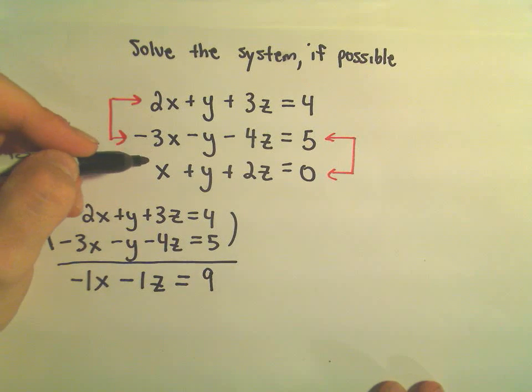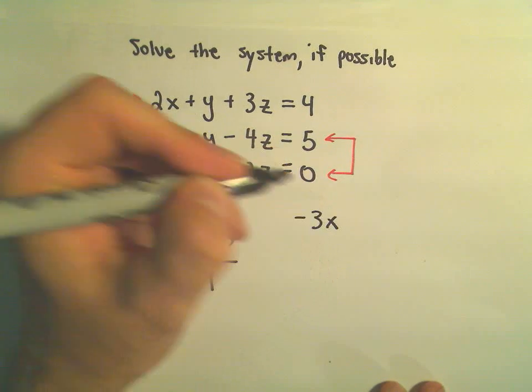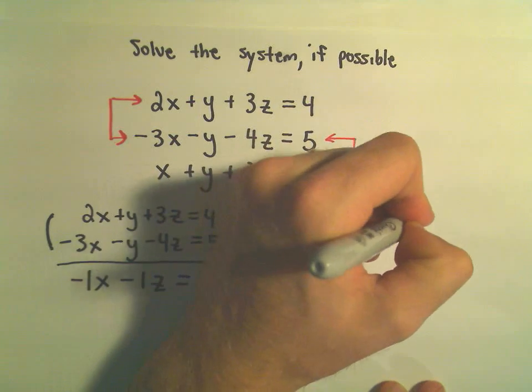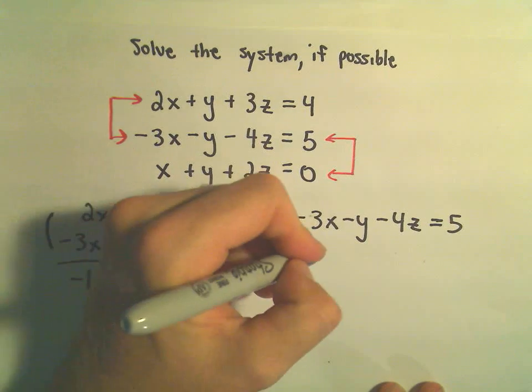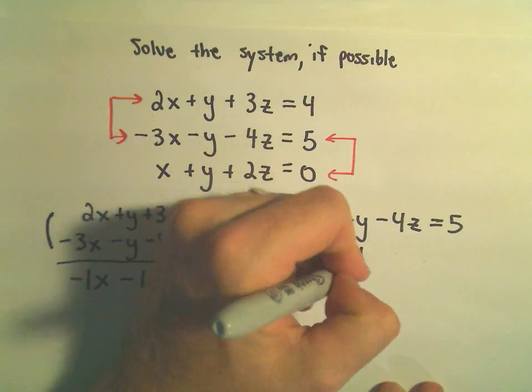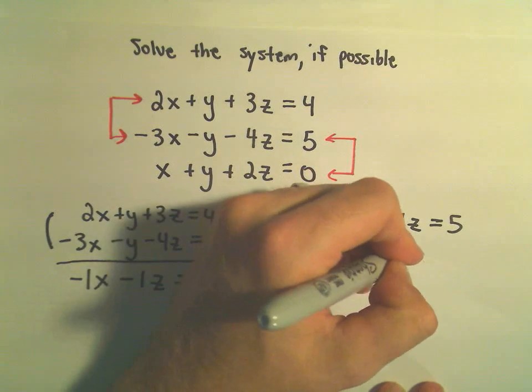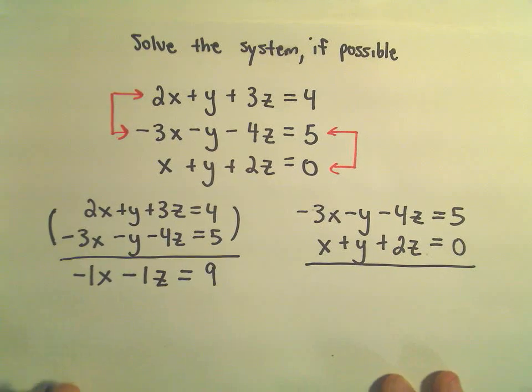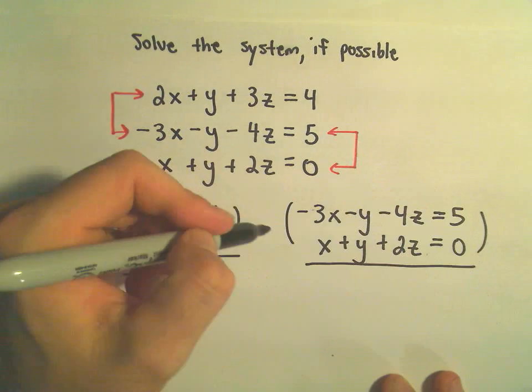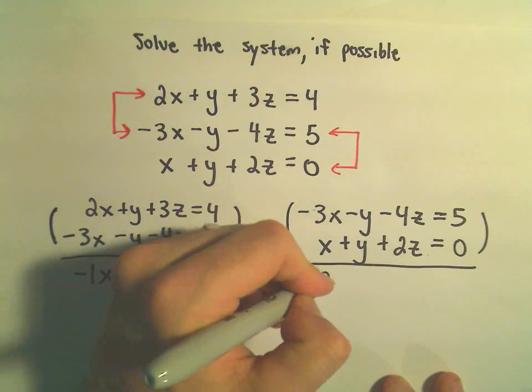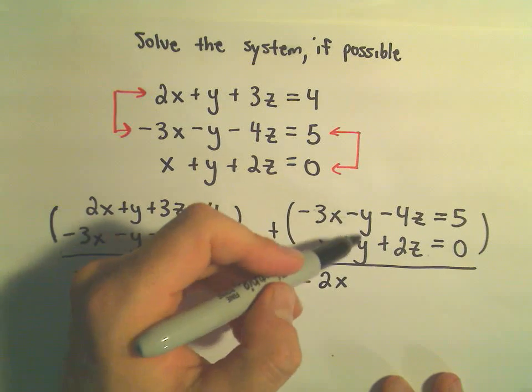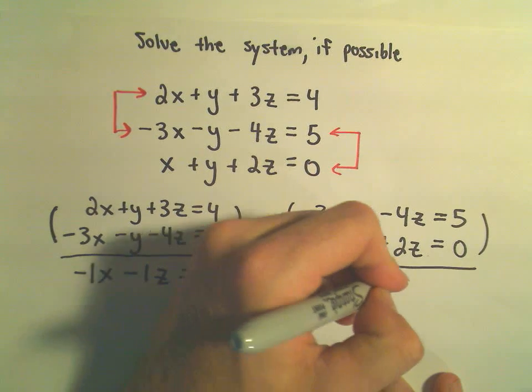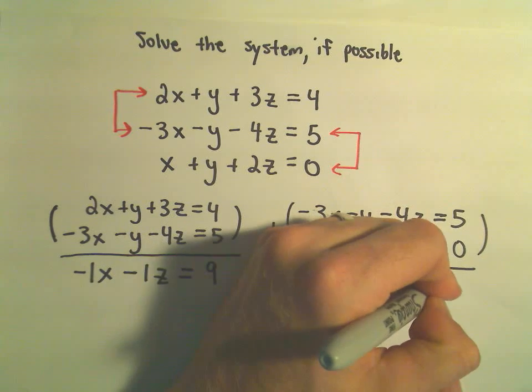I'm going to do the same thing with the second and third equations. So, negative 3x minus y minus 4z equals 5. And then we've got x plus y plus 2z equals 0. Well, if we just add those up immediately, we'll get negative 3x plus 1x will be negative 2x. Our y's will cancel out. We've got negative 4z plus 2z, which will be negative 2z equals 5.